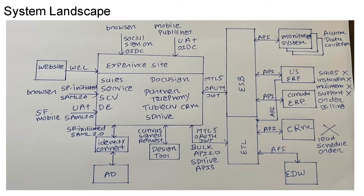There are three monitoring systems which provide different kinds of events. I would be connecting them with MuleSoft using APIs provided by the monitoring systems. There are two different ERPs — one from the US and one from Canada — which currently handle sales, installation, maintenance, support, orders, and billing. I recommend retiring sales, installation, maintenance, and support from both ERPs as those will be part of Salesforce. Both ERPs would be connected with Salesforce using MuleSoft as ESB. For data migration, I recommend going with Informatica as the ETL tool, connected to Salesforce using OAuth flow, utilizing Bulk API 2.0 to migrate data from ERPs, monitoring systems, and the existing CRM.